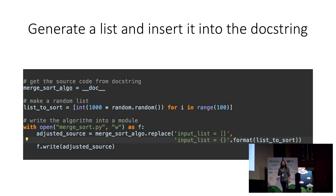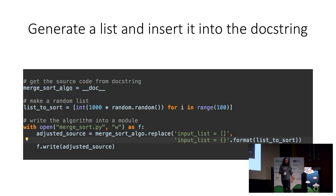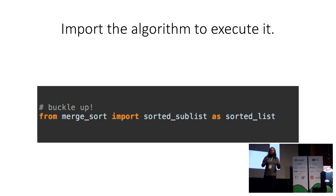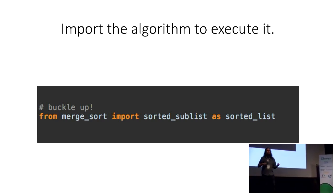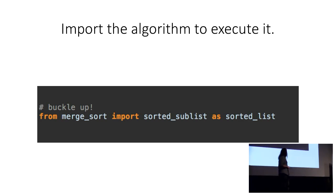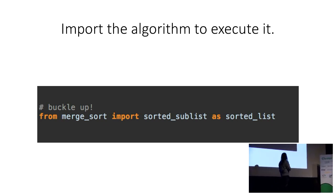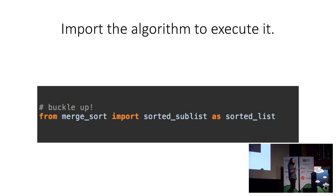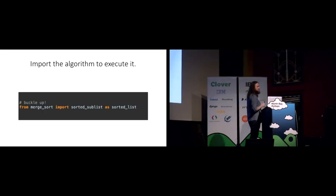And now the moment you've all been waiting for: 'from merge_sort import sorted_sublist as sorted_list.' This imports that new merge sort module, causing it to be run. It will split its list, create its children, import those children. They'll create their own children and import them all the way down. Things will start bubbling up, getting merged, until they're all the way back up here — the sorted_sublist — which we then bind locally as our final fully sorted list. And that is how you implement merge sort in Python using only the import statement.